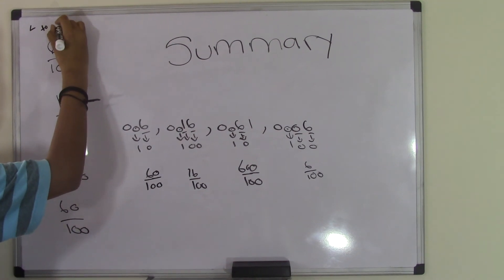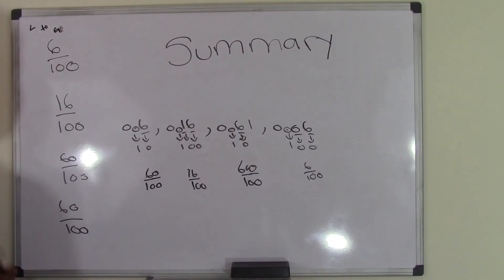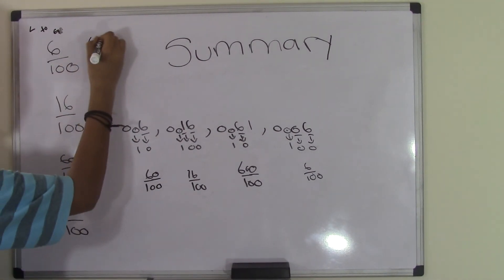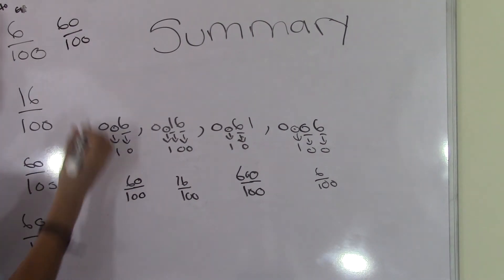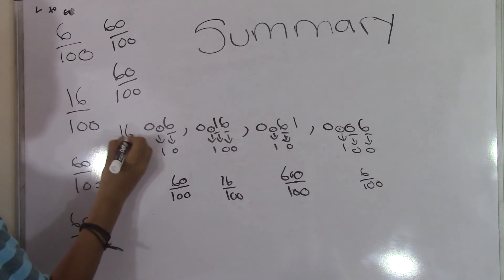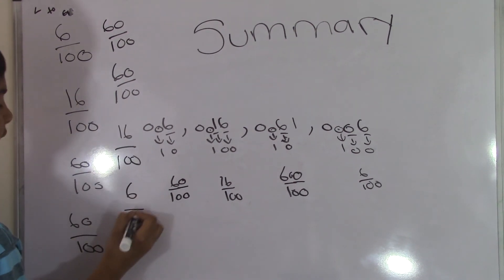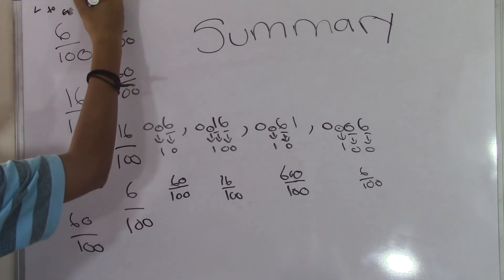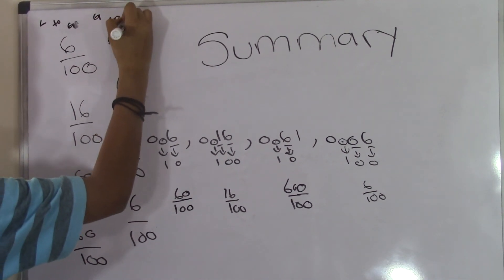To go greatest to least, all you need to do is reverse them. So it will be 60 over 100, 60 over 100, 16 over 100, and 6 over 100. This will be called the greatest to least form.